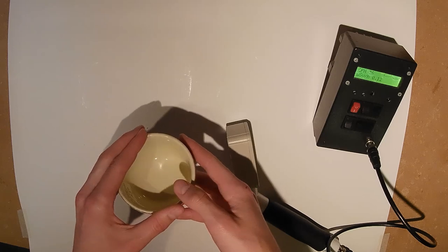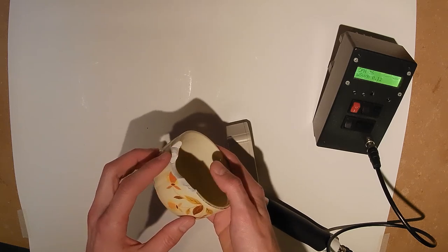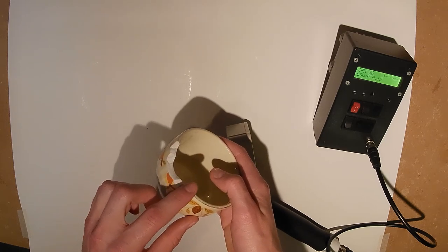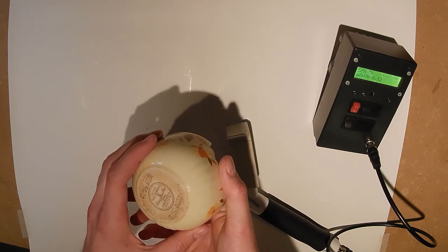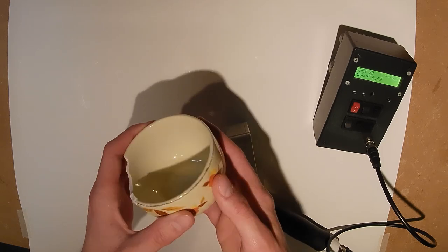Next up is a custard cup from the Hall China Company's Autumn Leaf line. It measures about 400 counts per minute and was also damaged during transport, unfortunately.